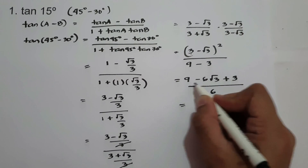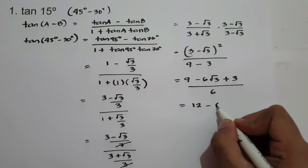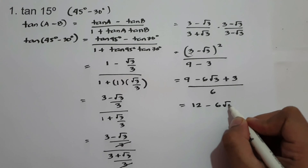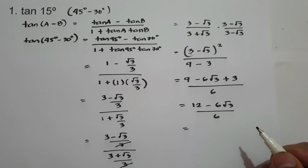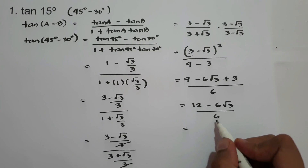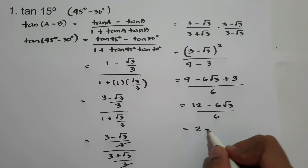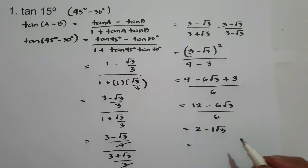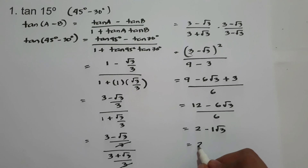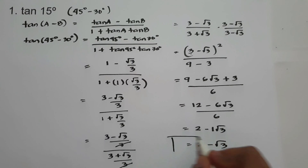So we have 9 + 3 = 12, minus 6√3, all over 6. Simplifying: 12/6 = 2, and 6/6 = 1, giving us 2 - √3. This is our answer for tangent 15 degrees.